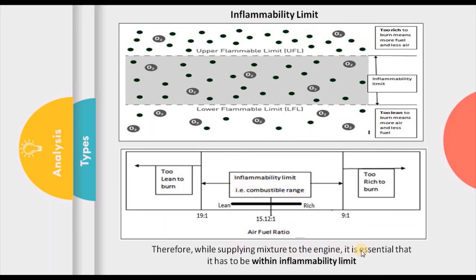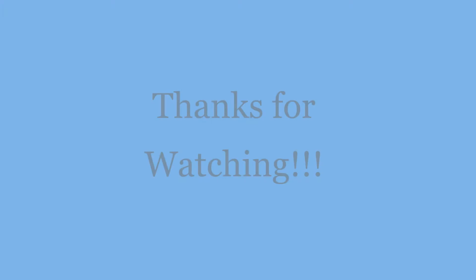That is where the importance of the inflammability limit comes into the picture. While supplying the mixture to the engine, it is essential to ensure that the mixture is within the inflammability limit. That means for a gasoline engine, it has to be between 9:1 and 19:1.